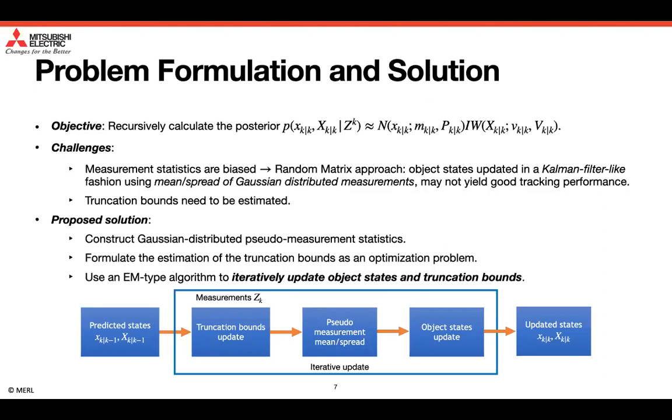Second, the truncation bounds need to be estimated. In our proposed solution, the first problem is addressed by constructing Gaussian distributed pseudo measurement statistics, and the second problem is addressed by formulating the estimation of the truncation bounds as an optimization problem. To solve the extended object tracking problem in a systematic manner, we use an expectation maximization type algorithm to iteratively update the object states and the truncation bounds. Specifically, at time k, we first use a random matrix prediction equation to compute the predicted object state at time k, using the updated object states at time k minus 1.